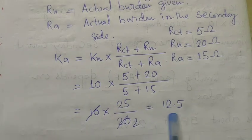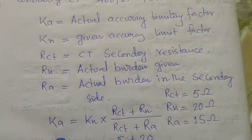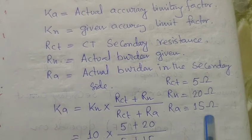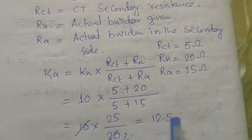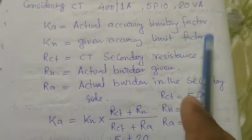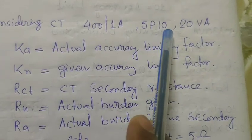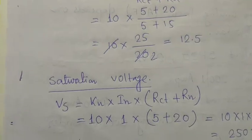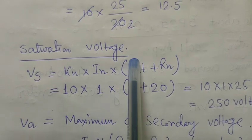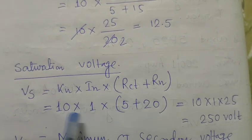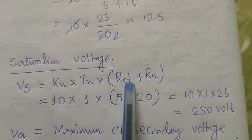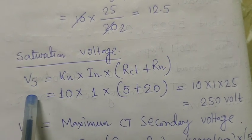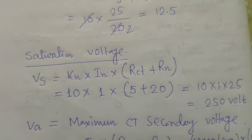By putting these values into the formula, we get K = 12.5. K is the actual accuracy limiting factor. So by substituting the given parameters, the actual limiting factor is 12.5, whereas the given limiting factor is 10. Calculating the saturation voltage using Vs = KN × IN × (RCT + RN), and substituting the values, we get Vs = 250 V. Vs is the maximum CT secondary voltage.